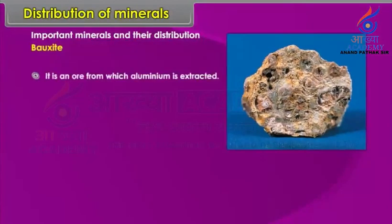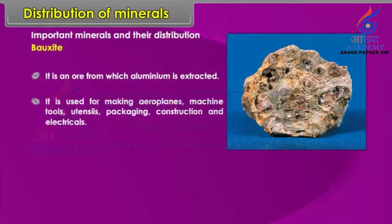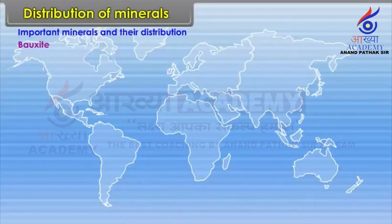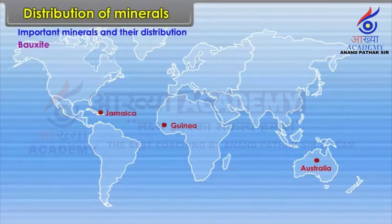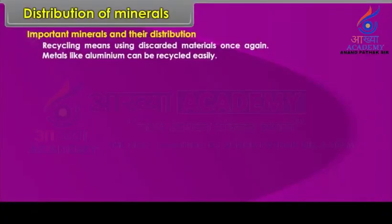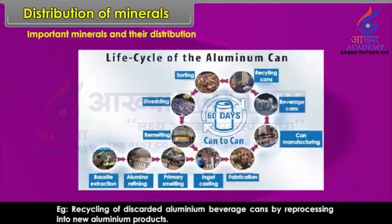Bauxite is used for making aeroplanes, machine tools, utensils, packaging, construction and electrical materials. It is found worldwide in: Australia, Guinea, Jamaica and Brazil. Recycling means using discarded materials once again. Metals like aluminium can be recycled easily — for example, recycling of discarded aluminium beverage cans by reprocessing into new aluminium products.